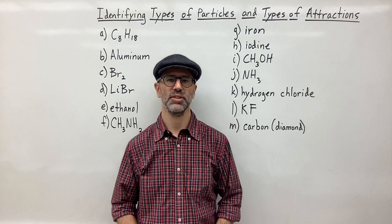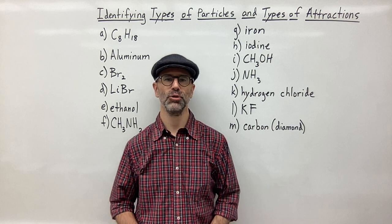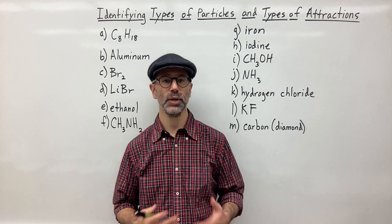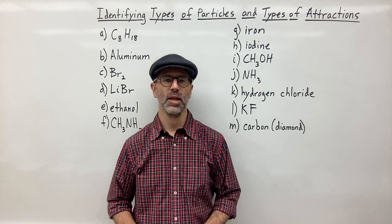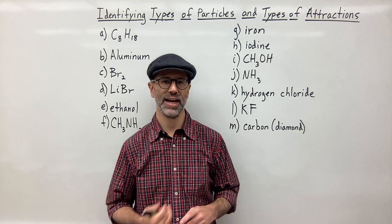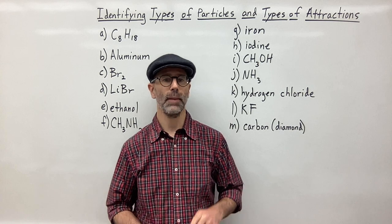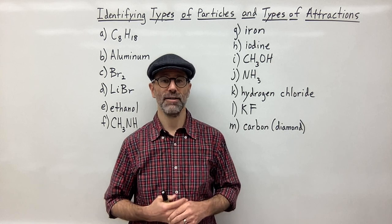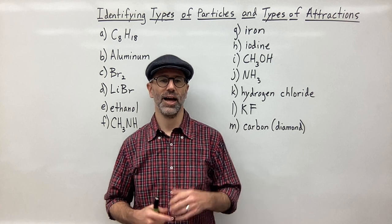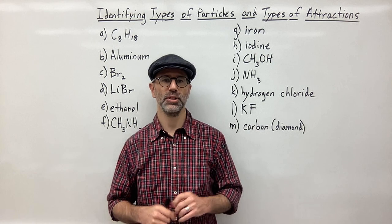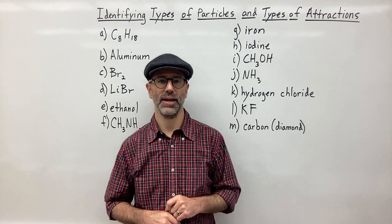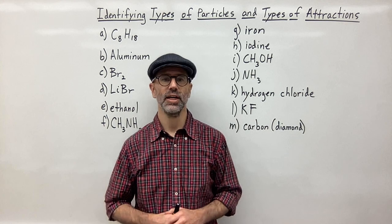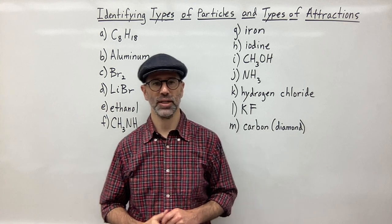Hello everyone and welcome back. My name is Mr. Covalt and in this video I'm going to go over how you can identify the type of particles in your substance as well as the type of attractions between those particles. The first thing you need to do is identify whether you've got an ionic compound, a molecular compound, or a metallic compound. From there we identify whether you've got dipole-dipole, electrostatic ionic interaction, hydrogen bonding, or van der Waals London dispersion forces between your particles.